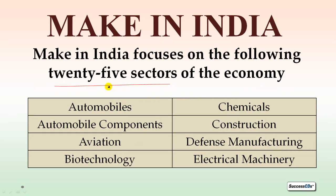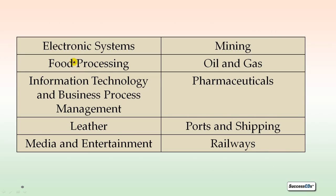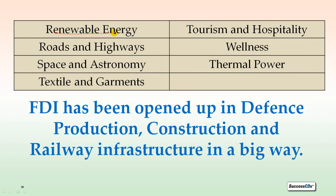Let us see which are those 25 sectors jin per Government of India ka main focus hai Make in India ke liye: Automobile sector, automobile components, aviation, biotechnology, chemicals, construction, defense manufacturing, electrical machinery, electronic systems, food processing, information technology and business process management, leather, media and entertainment, mining, oil and gas, pharmaceuticals, ports and shipping, railways, renewable energy, roads and highways, space and technology, textile and garments, tourism and hospitality, wellness, thermal power. Ye joh 25 sectors hain, in per main focus hai Make in India ka.